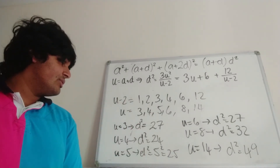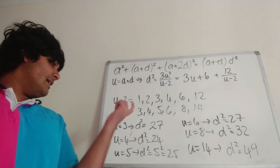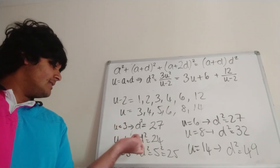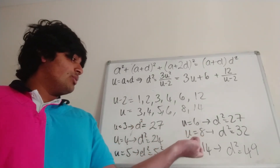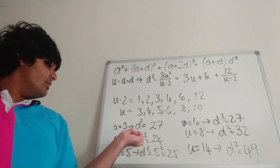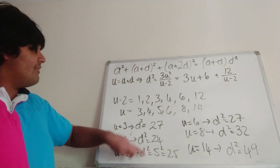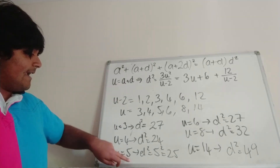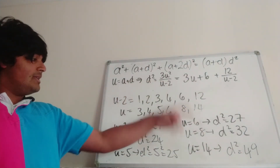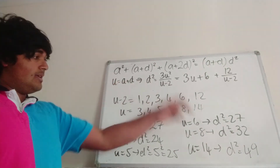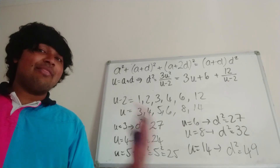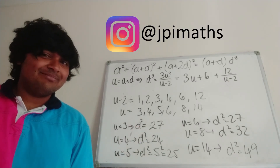So in total we have four solutions, or four special arithmetic progressions. With u equals 5 and d equals plus or minus 5, and u equals 14 and d equals plus or minus 7. Going back to what that means: if d equals 5, then a equals 0; if d equals minus 5, then a equals 10; if d equals minus 7, then a equals 21; and if d equals 7, then a equals 7. That gives us four arithmetic progressions which are special, and those are the only ones. Thanks for watching, I'll catch you in the next one. Have a great day.